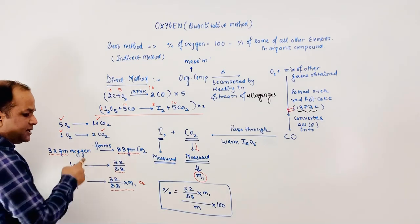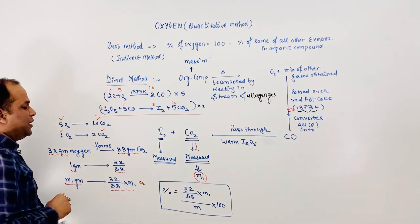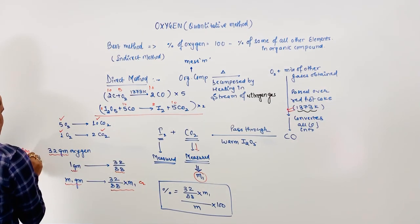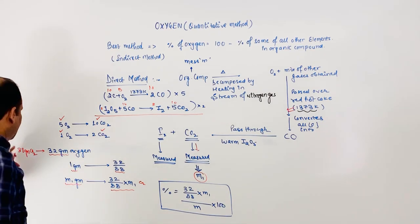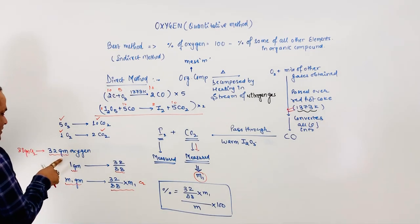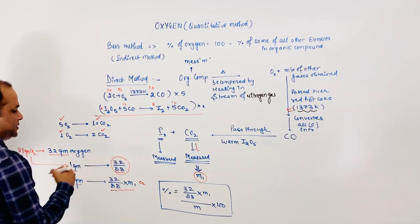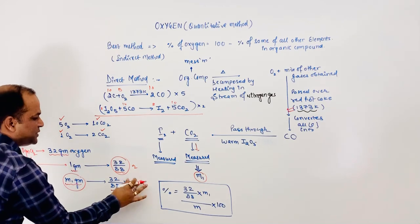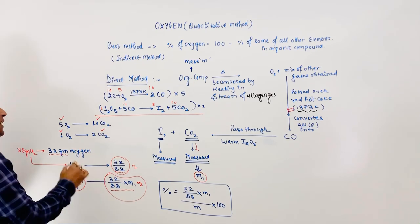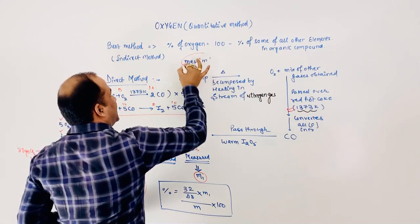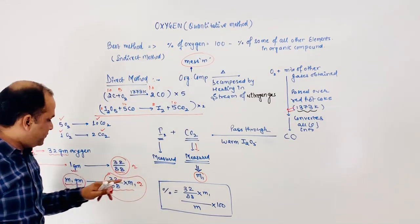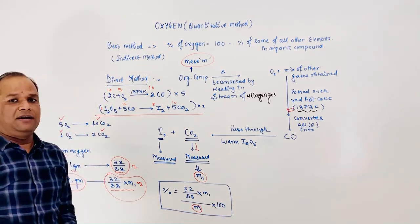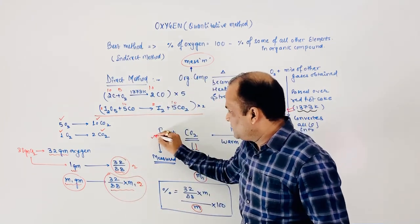To find the amount of oxygen, we reverse the calculation: 88 grams of CO₂ is formed from 32 grams of oxygen. Therefore, 1 gram of CO₂ contains 32/88 grams of O₂, and M1 grams of CO₂ contains (32/88) × M1 grams of O₂. If the mass of the organic compound is S, then: % oxygen = (32/88 × M1) / S × 100.